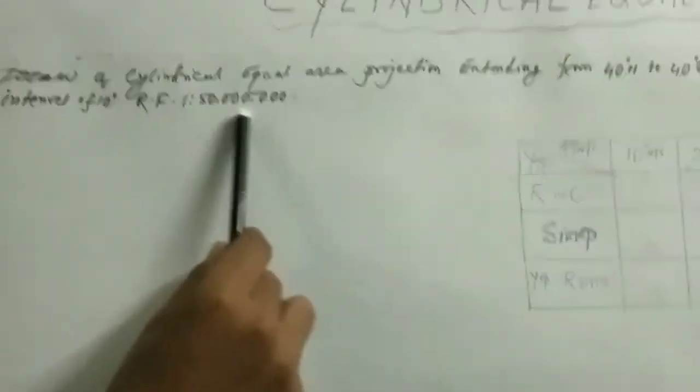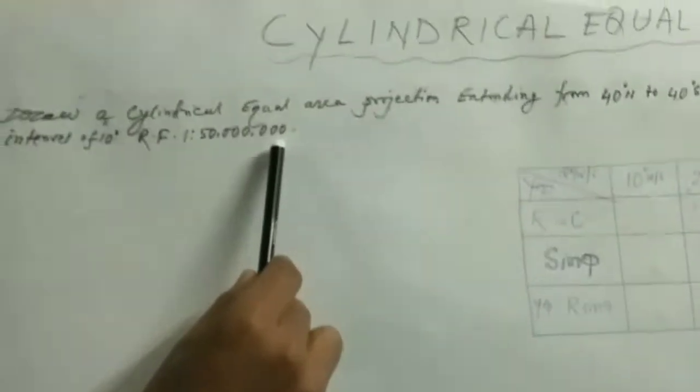The RF is 1 to 30 million. This is how we calculate. The first step is to find R, the radius of the generating globe.